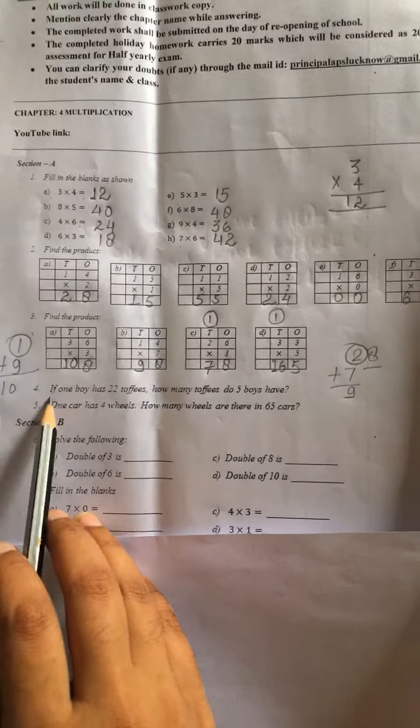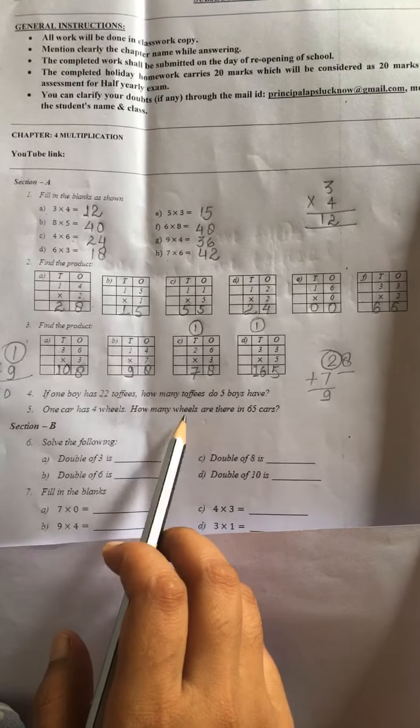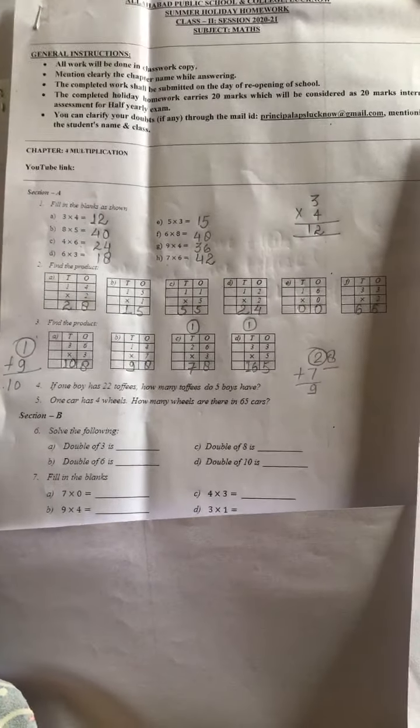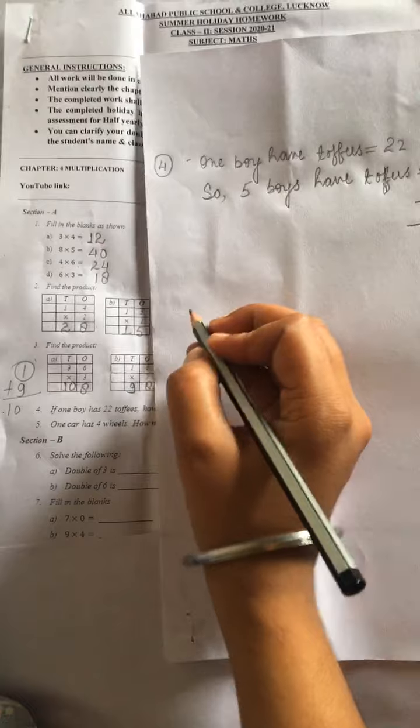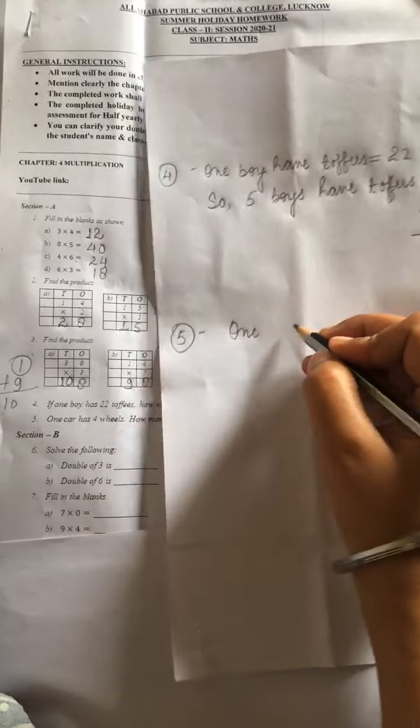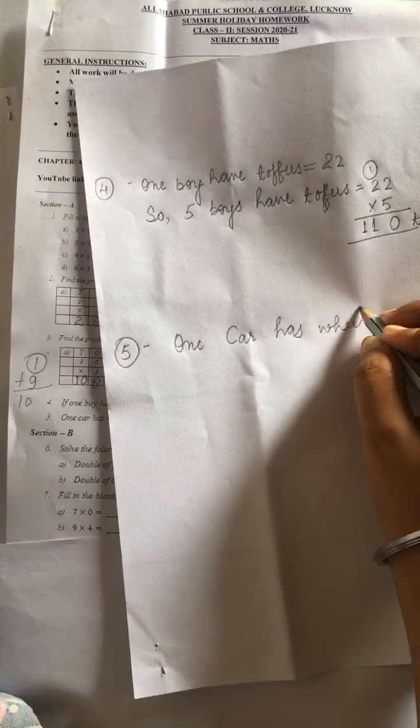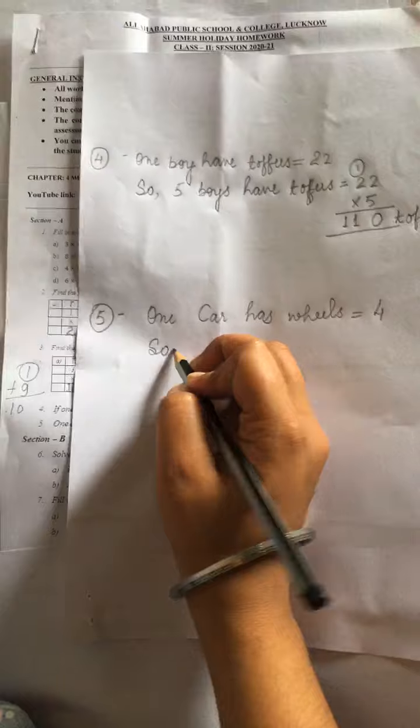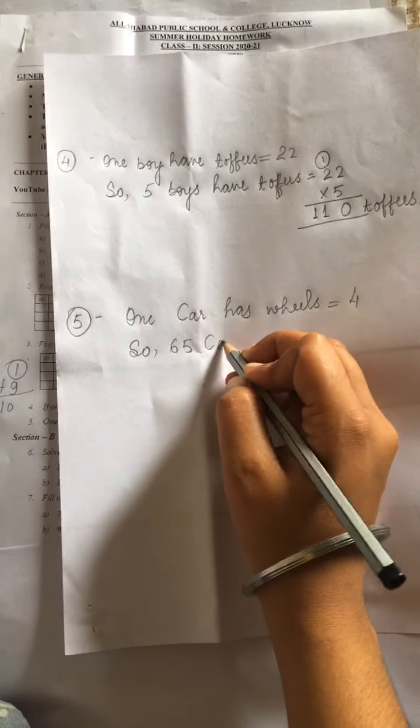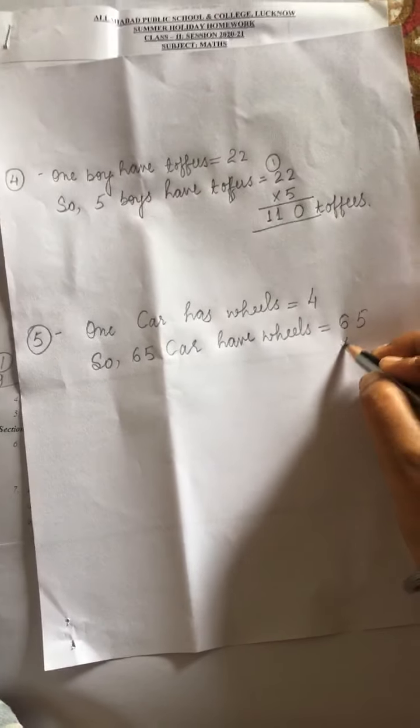Now question number 5. 1 car has 4 wheels. 1 car ke kitne wheels hain? 4. How many wheels are there in 65 cars? If there is 65 cars, to kitne wheels honge? So question number 5. 1 car has wheels equals to 4. So 65 car have wheels equals to 65 multiply by 4.